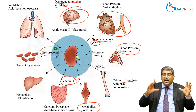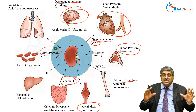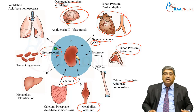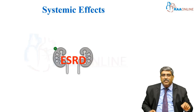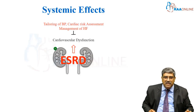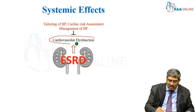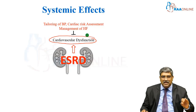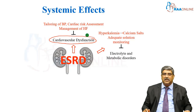So, the kidney can interact with various organ systems and various alterations can happen inside the body. Coming to the systemic effects of end-stage renal disease, there can be cardiovascular dysfunction. Here you have to manage blood pressure, assess cardiac risk, and manage heart failure.